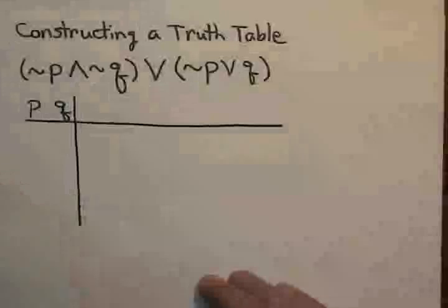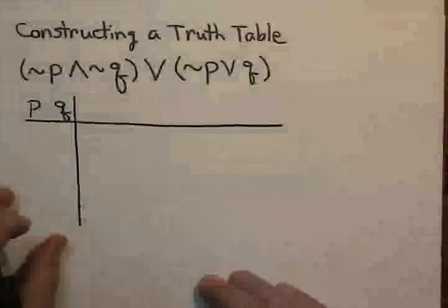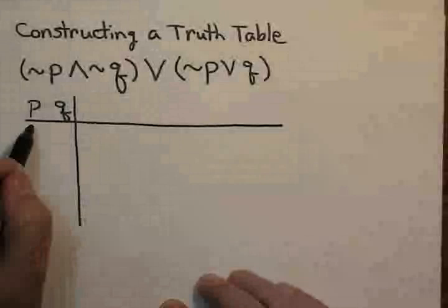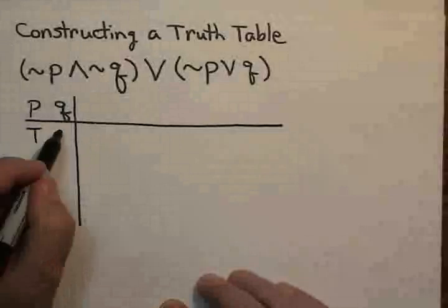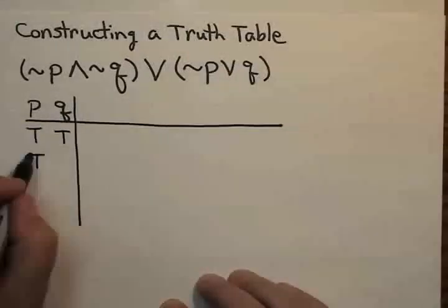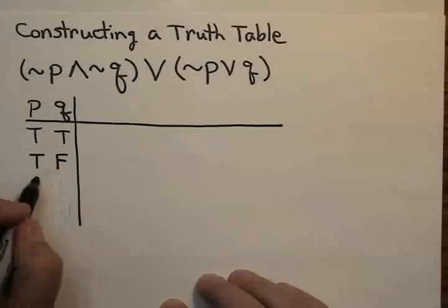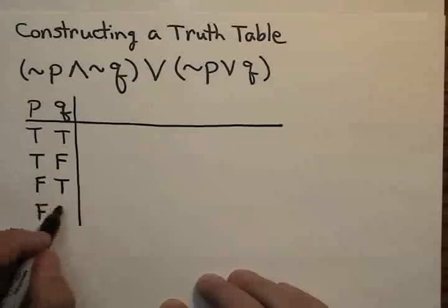And as my truth table begins, it's like so. Notice that with two statements, there are four possibilities: true true, true false, false true, and false false.